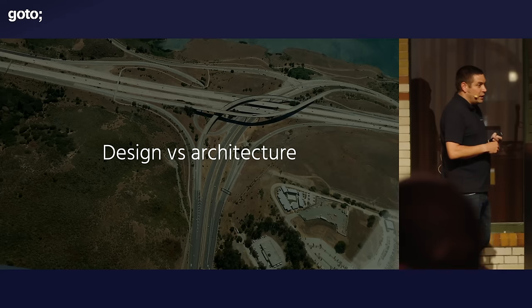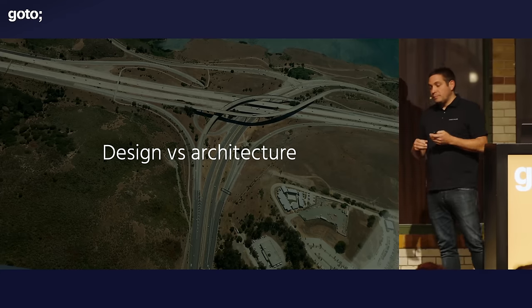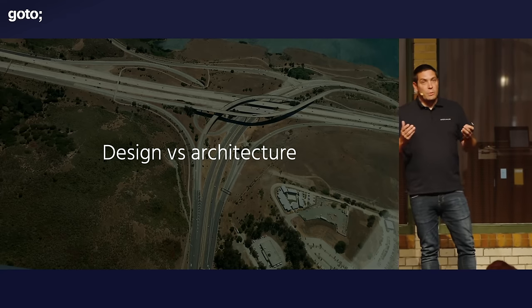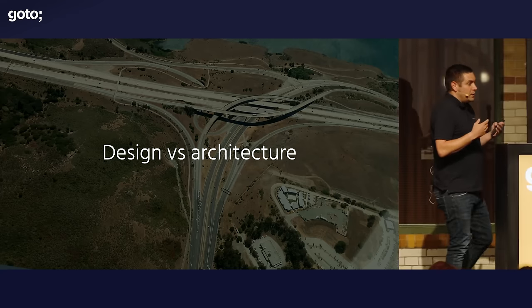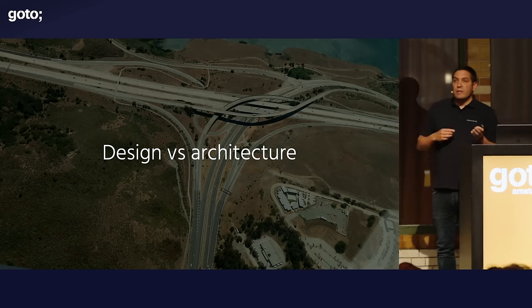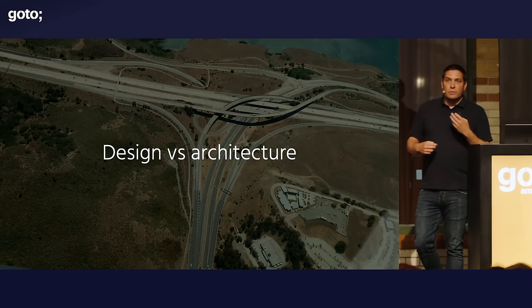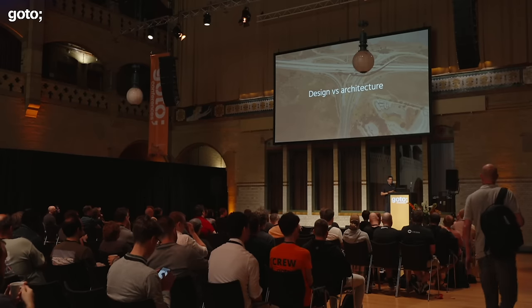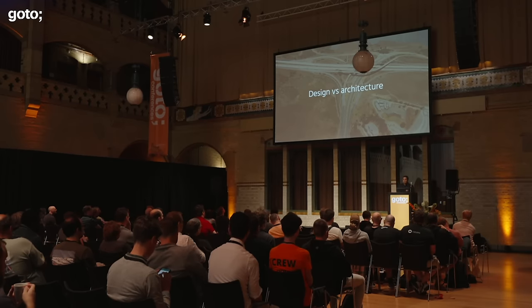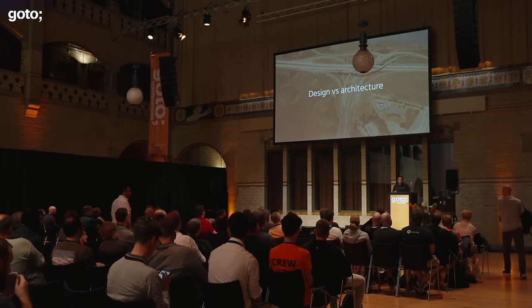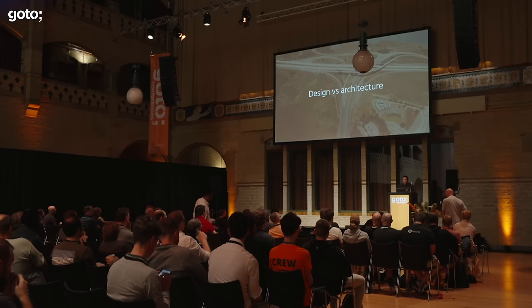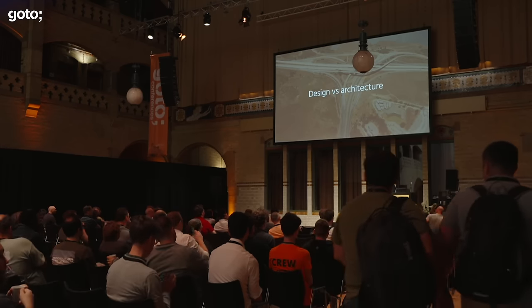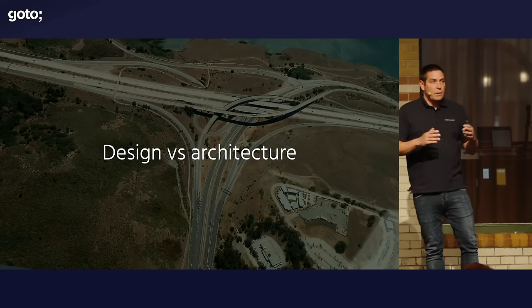So what is software architecture? When is something design and when is it architecture? Does it matter? I'd say both are about making significant decisions, where 'significant' is measured by the cost of change — if you get it wrong, how expensive in time is it to fix? Design is typically local: within a class, within a module, within a project. Architecture is on a higher level: project level, organization level. And my point is that you can make decisions on going specific or generic on all of those levels.